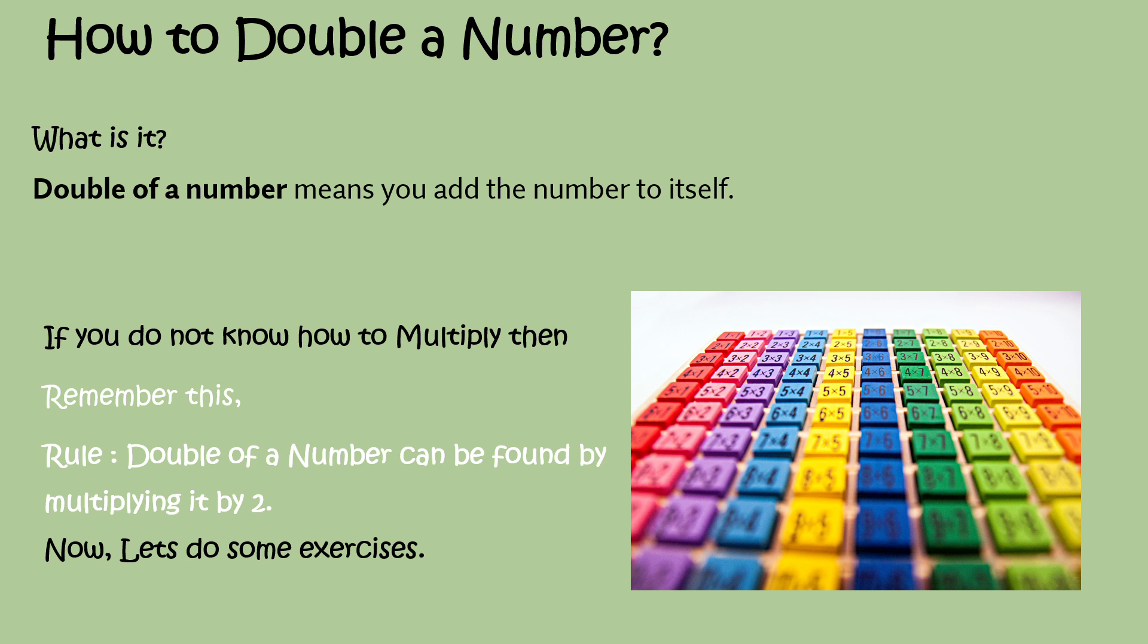How to double a number? What is it? Double of a number means you add the number to itself. If you don't know how to multiply, remember this rule: Double of a number can be found by multiplying it by two. Now, let's do some exercises.